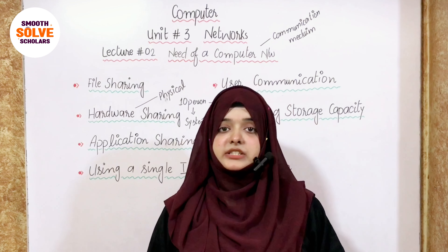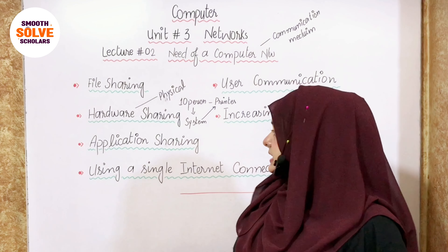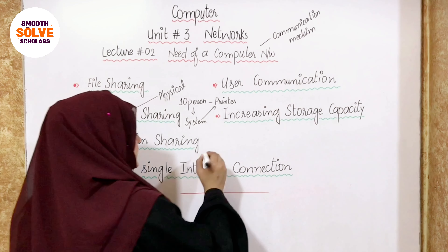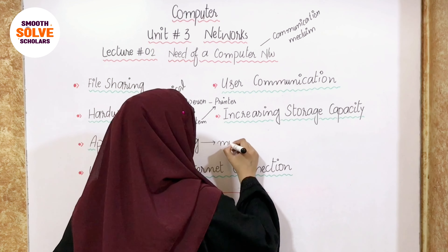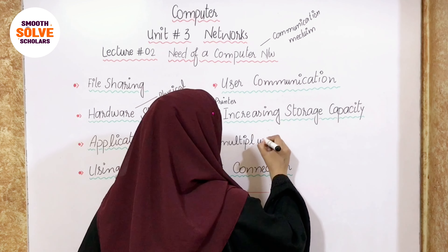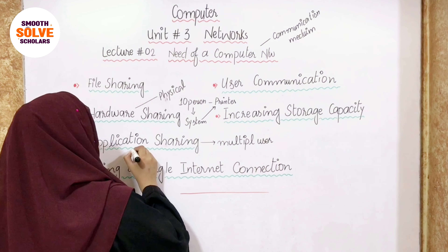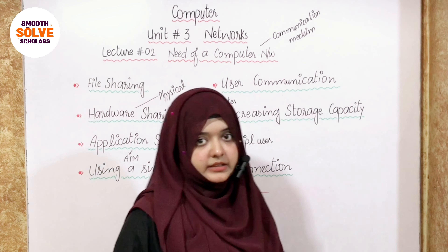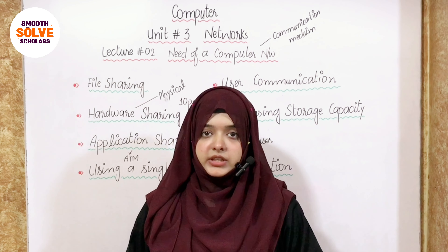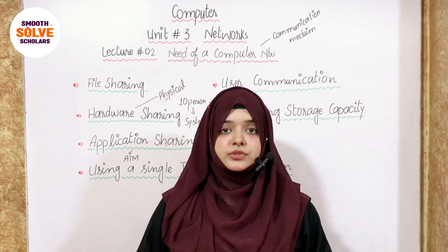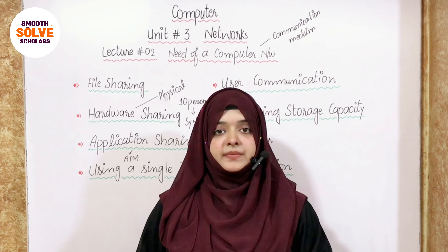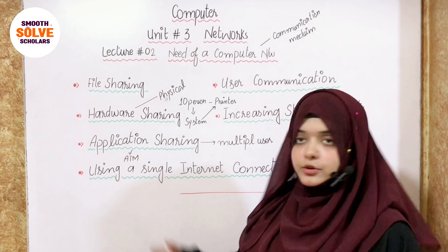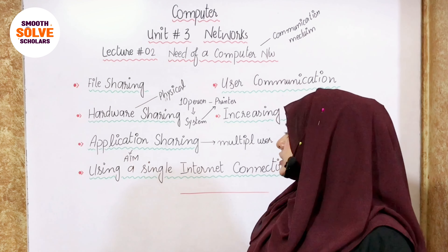The next one is application sharing. What happens in application sharing is that one single application can be used by multiple users. The main example is ATM — Automated Teller Machine. If you go to an ATM room, there is one machine and person by person each person can use the application, but multiple users use it. This is called application sharing.